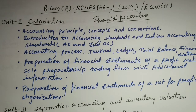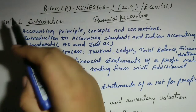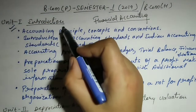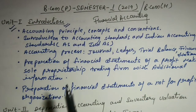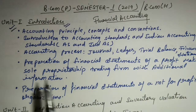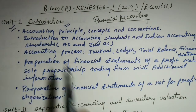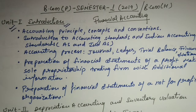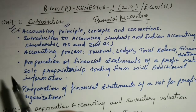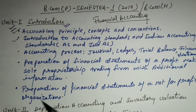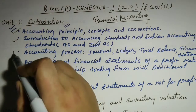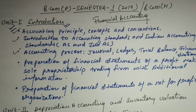Your Unit 1 is Introduction. In the Introduction, the things you need to cover are: Accounting Principles, Concepts and Convention — what are the principles you covered in 11th class — then Accounting Standards and Indian Accounting Standards, and then Accounting Process: Journal, Ledger, Trial Balance, and Financial Statement.